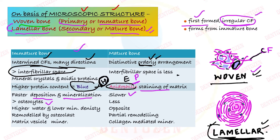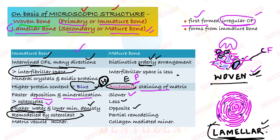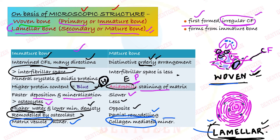Woven bone thus has more osteocytes compared to lamellar bone. Woven bone has higher water content and lower mineral density — the opposite of lamellar bone. Woven bone can be completely remodeled by osteoclast cells, whereas only partial remodeling occurs in lamellar bone. Mineralization in woven bone happens via matrix vesicles, whereas in lamellar bone it is collagen-mediated. Those are the theories of mineralization, which you can explore in a dedicated video.